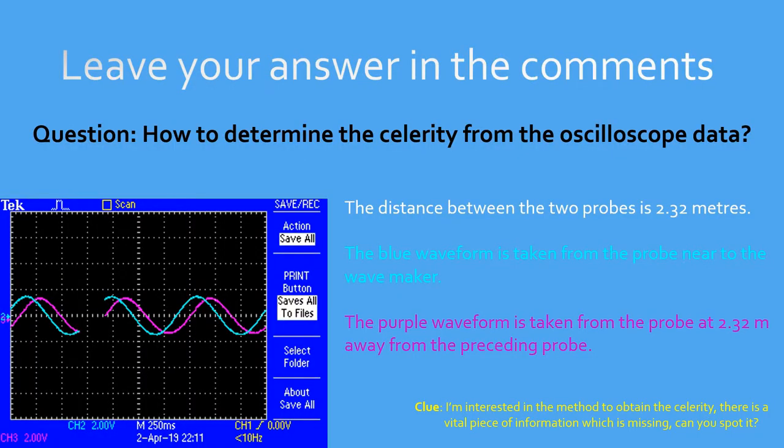Now, I'll give you a problem to solve. I tell you that the distance between the two probes that display results in the oscilloscope is 2.32 m. How could you use this image of the oscilloscope data to obtain directly the celerity? Come back later to think about it. Share your answer in the comments section.